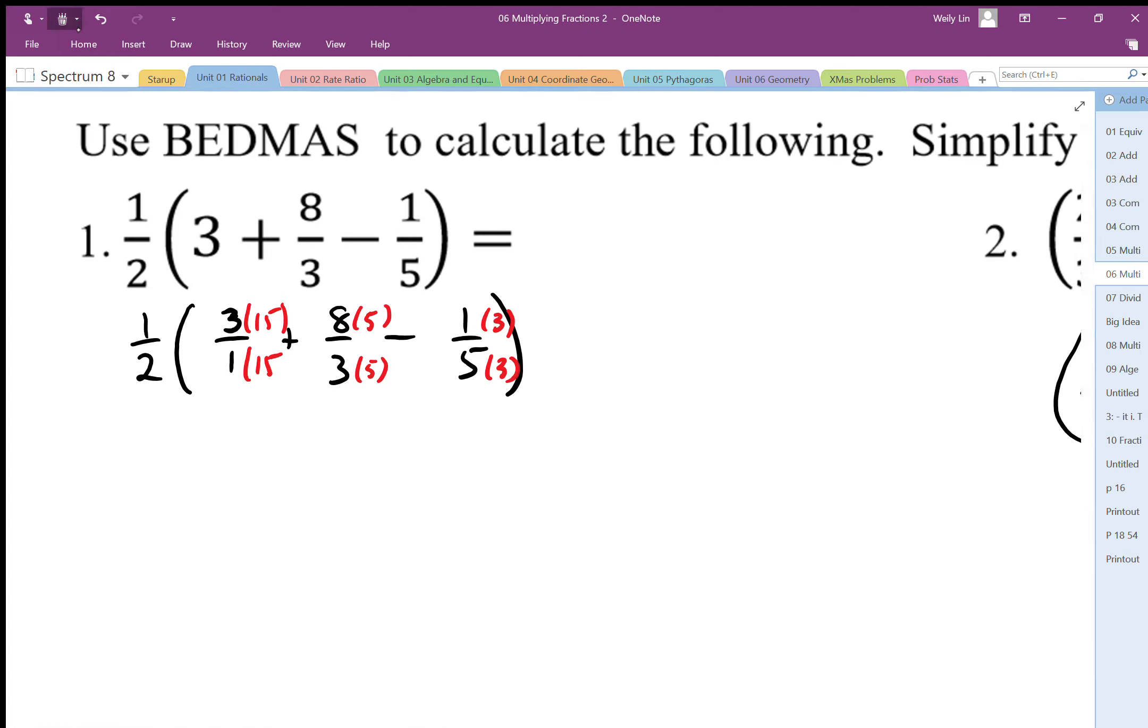So showing those common denominators, I'm going to add those fractions together. I have 45 over 15 plus 40 over 15 minus 3 over 15.